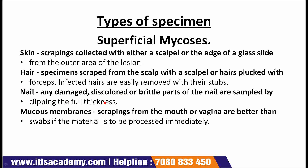The next specimen type is mucous membrane. Scrapings from the mouth or vagina are better than swabs if the material is to be processed immediately. However, swabs are commonly used, and since yeast quickly loses viability on drying, a transport swab is preferred.